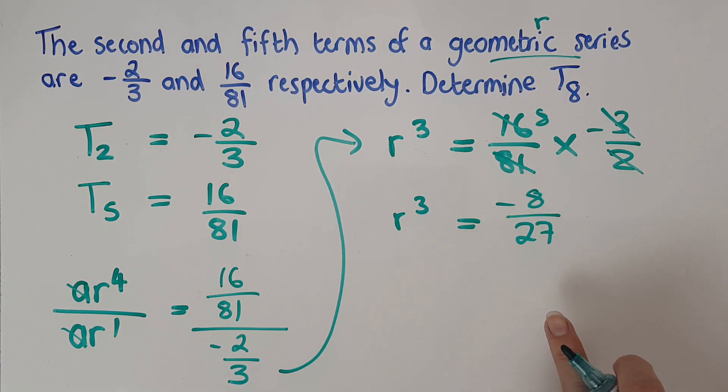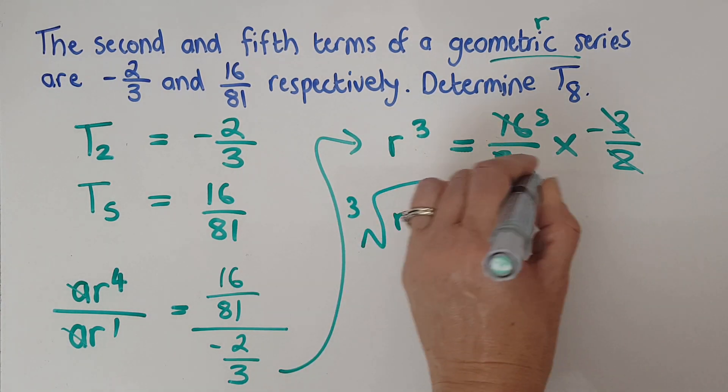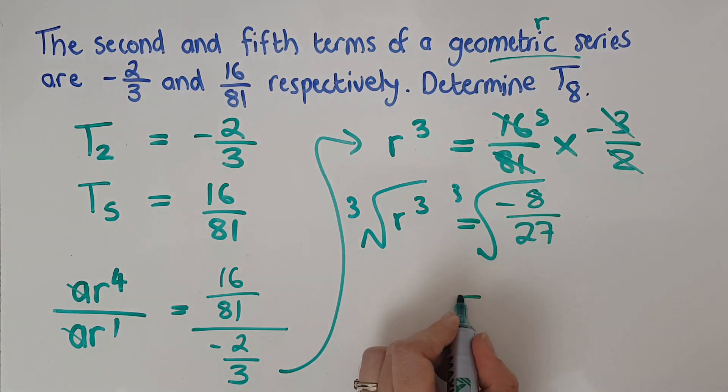So now I've got R as that. So now I need to cube root both sides. Of course, these are perfect cubes, aren't they? So R is going to be negative two over three.